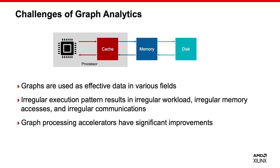However, graph processing applications face challenges like irregular access patterns, intensive read and write updates, irregular memory access, and irregular communications. Existing general architectures cannot effectively handle these challenges. In order to overcome them, a large number of graph processing accelerator designs have been proposed — tailoring the computation pipeline, memory subsystem, storage subsystem, and communication subsystem to the graph processing application. Graph processor accelerators have achieved significant improvement in performance and energy efficiency compared with general architectures.